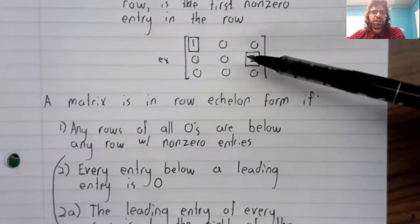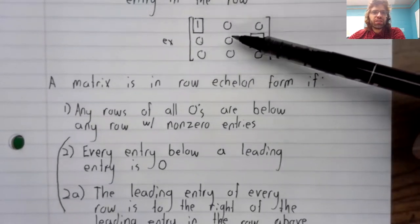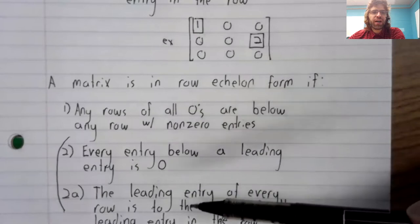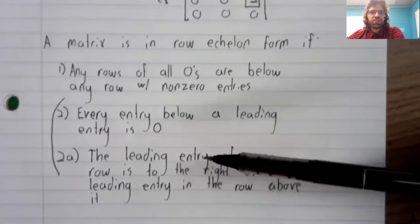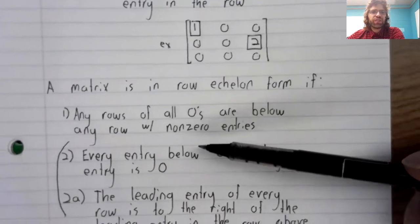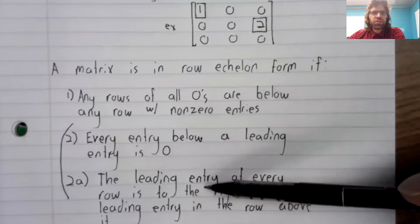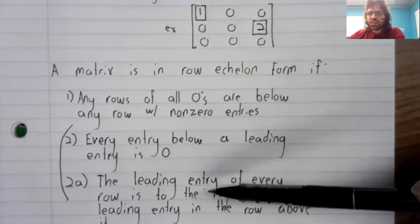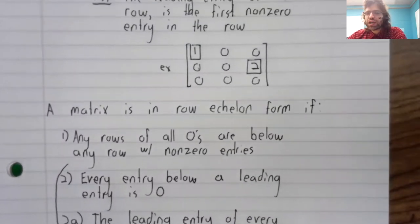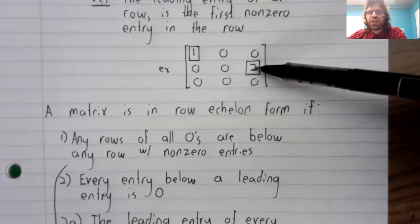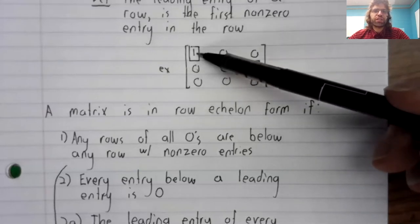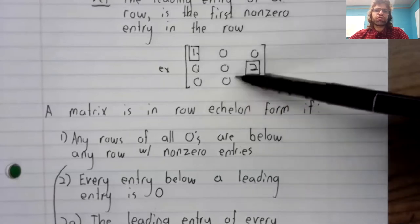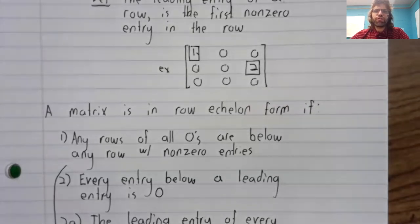We've already made the observation that this matrix satisfies this condition—I'm sorry, that this matrix satisfies this condition. It also satisfies this condition. If you look at the leading entries, this leading entry is to the right of this leading entry. So this matrix is in row echelon form.